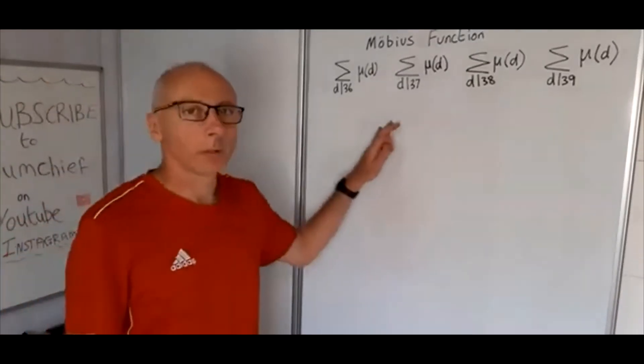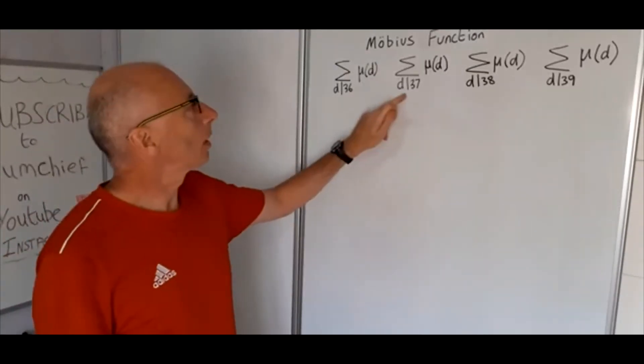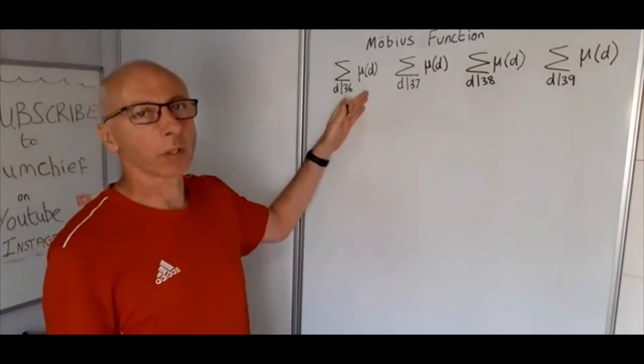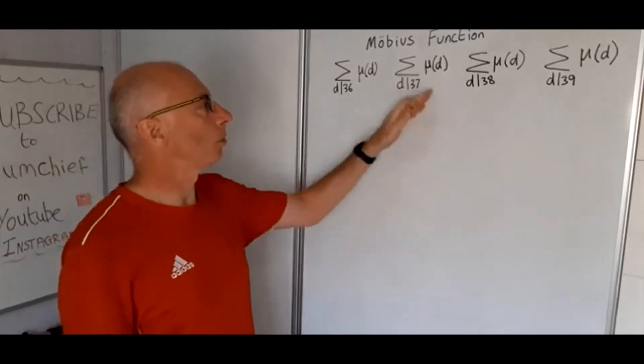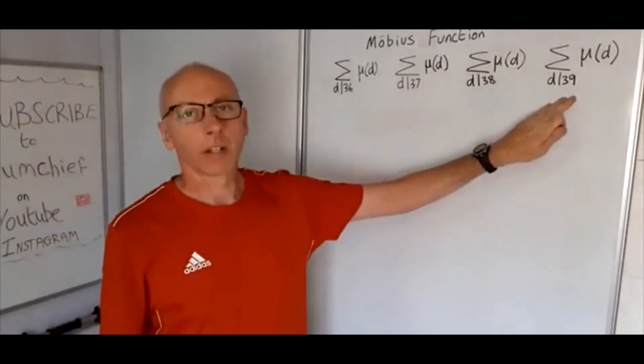So in this video we're going to look at the divisors of any given number and then we're going to sum the Möbius function of each one of those divisors for all of the numbers. So here we're going to go 36, 37, 38, 39.